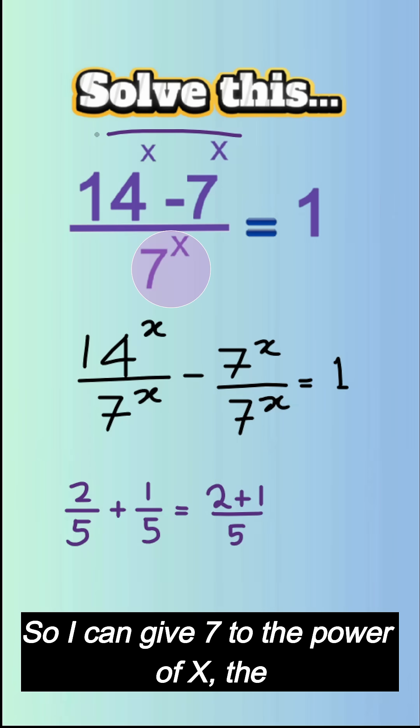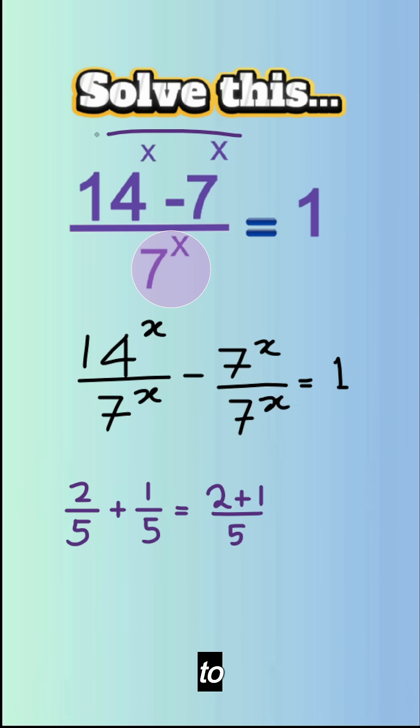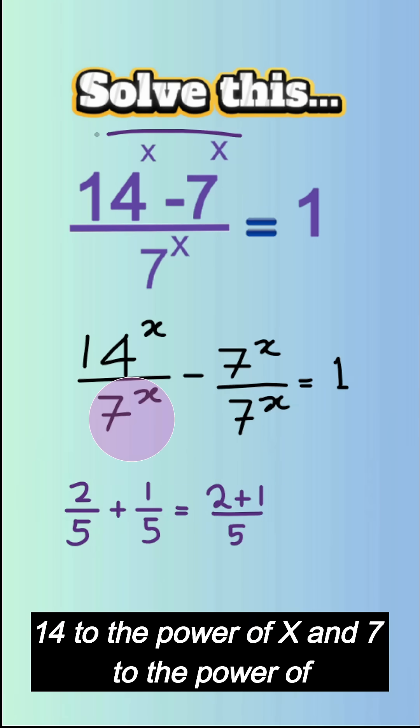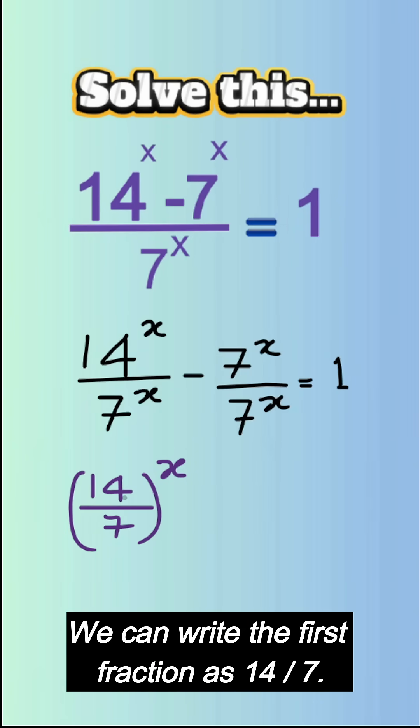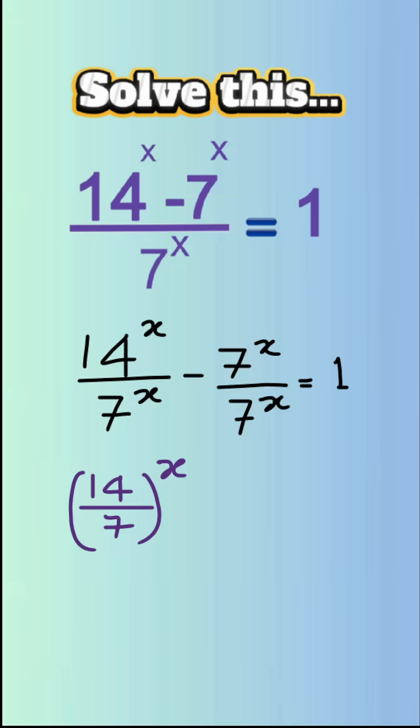So I can give 7 to the power of x, the denominator, to 14 to the power of x and 7 to the power of x separately, and I can rewrite it. We can write the first fraction as 14 over 7 raised to the power of x, take away 1 is equal to 1.